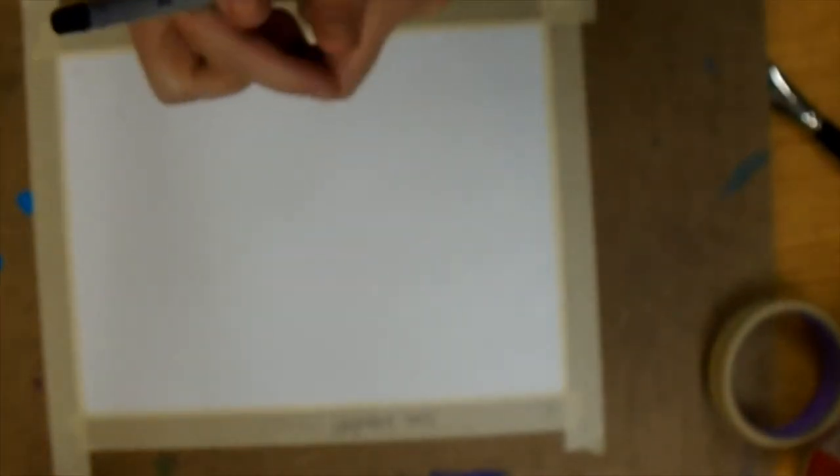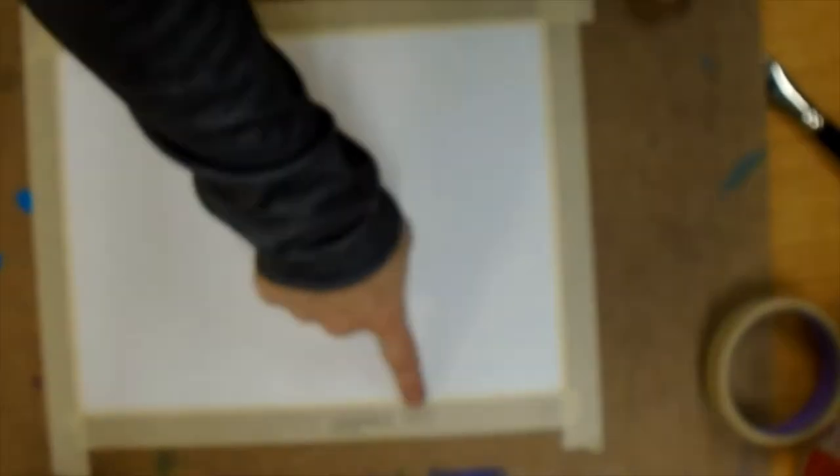Then you need to use the Sharpie marker to write your name on the masking tape so that I know whose project board this is. So name on the back of the paper and name on the masking tape.